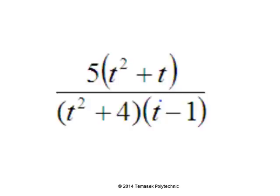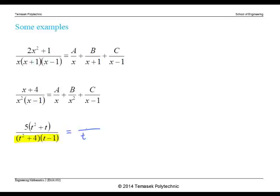In the last expression, we have factors t squared plus 4 and t minus 1. So our partial fractions contain the denominators t squared plus 4 and t minus 1. The numerator of t squared plus 4 is one degree less than the denominator, so we need t with a constant in front of it, plus b, and c for the denominator t minus 1.